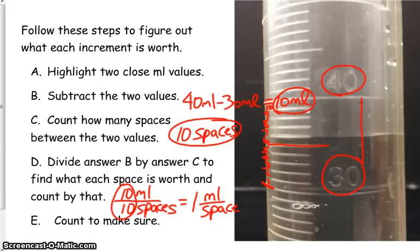Now I have to count to make sure. So let's start at our lower level, go to the upper level and let's count. So here's 30, 31, 32, 33, 34, 35. Notice that long line right in between 30 and 40 is 35 milliliters.